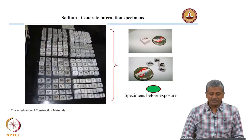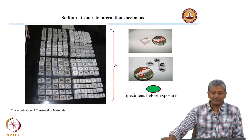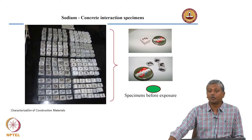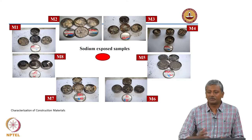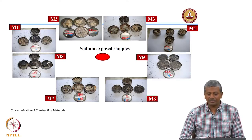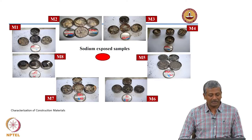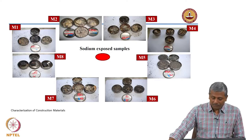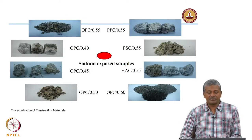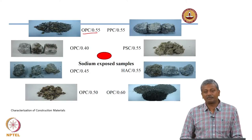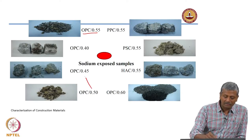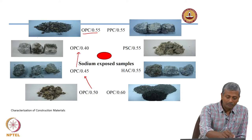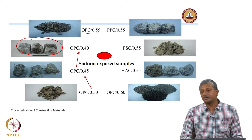These are the specimens which were first cast with different combinations of cement and water-to-binder ratios. You can see what happens to them after you extract them from the liquid sodium — none of them have preserved their shape; they are practically all disintegrated. If you compare the different systems, as you reduce the water-binder ratio from 0.55 to 0.45 and 0.4, you start seeing that the disintegration is reduced significantly.